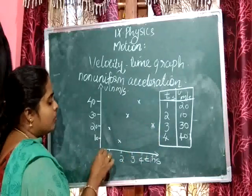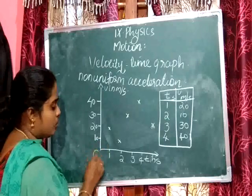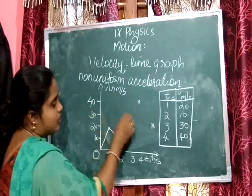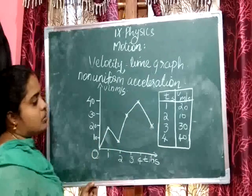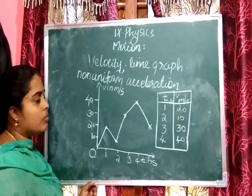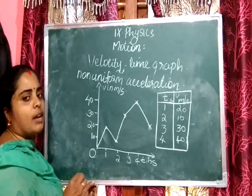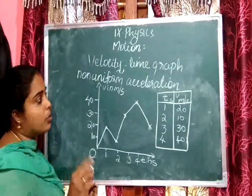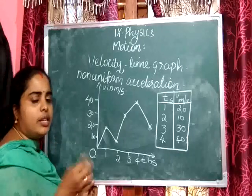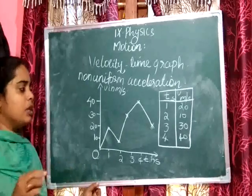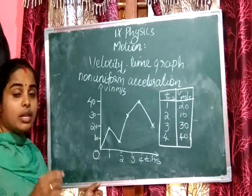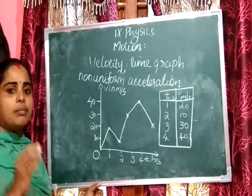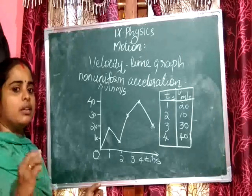When we plot these points and join them, we get an irregular shape. The velocity increases and decreases — it is not equal in equal intervals of time. For non-uniform accelerated motion, the velocity-time graph can have any shape.